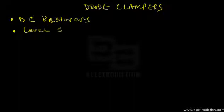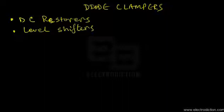Welcome to a tutorial on diode clampers. Clampers represent electronic circuits which have two types of function: they behave as DC restorers and also as level shifters. What they do is provide a DC reference voltage to any kind of input AC signal, shifting the input AC signal's level to either positive or negative voltage levels. Due to this type of function, they find application in wave shaping and TV receiver circuits.